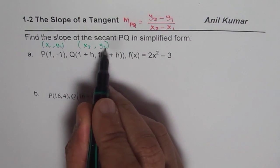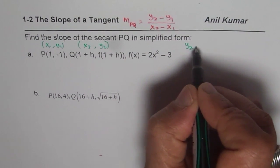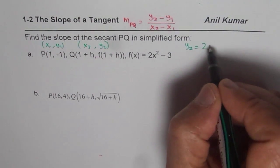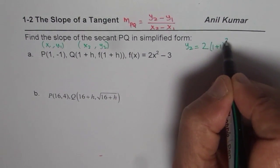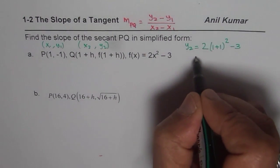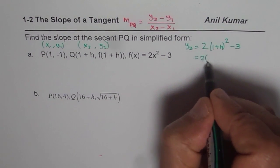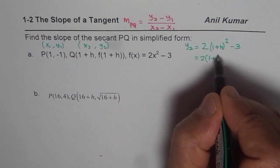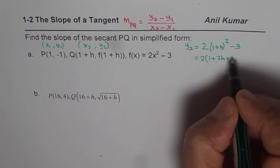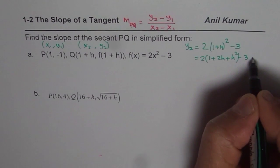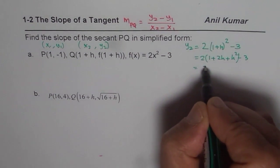So let us find y₂ now. So y₂ for us is 2 times, instead of x, I will write 1+h, whole square minus 3. So let us simplify this. So this is 1+h, right? So 2 times (1+2h+h²) minus 3. So that is, let us open the bracket.